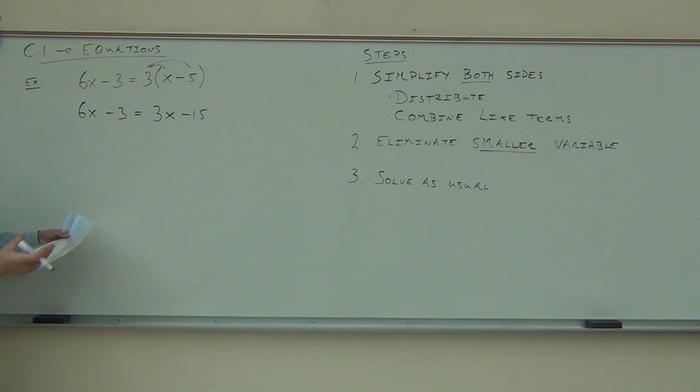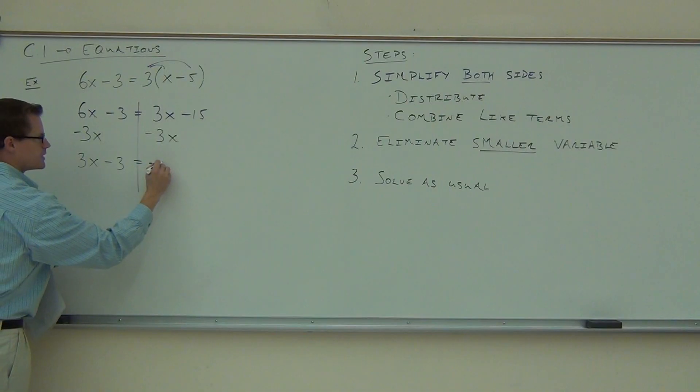So what we're looking for now is after we've distributed and tried to combine like terms, we're going to eliminate the smaller variable. In our case, we're going to have that 3x. So we're going to eliminate the 3x, and here we're also going to be using subtraction. So as long as we do this to both sides, it's an equation after all, right? What you do to one side, you have to do to the other. As long as we do that to both sides, we're good to go. Left-hand side, we'll get 3x minus 3. Right-hand side, this is why we did that step. We're just going to have negative 15. Don't forget that negative.